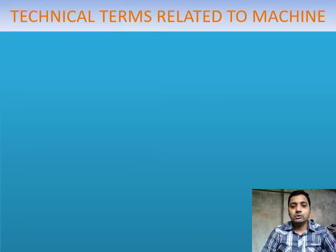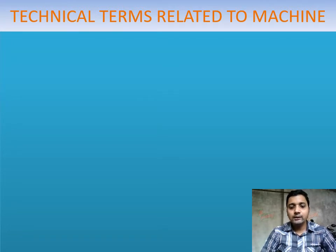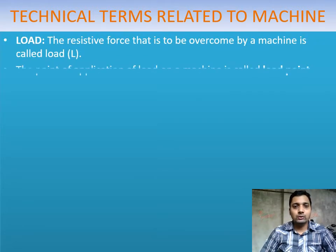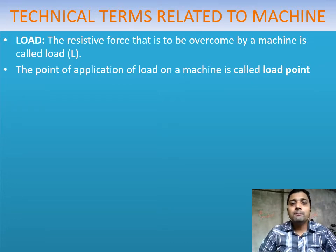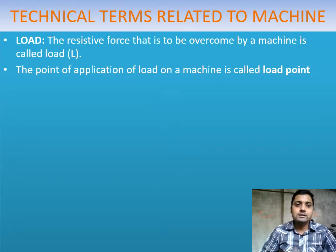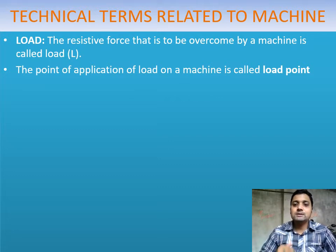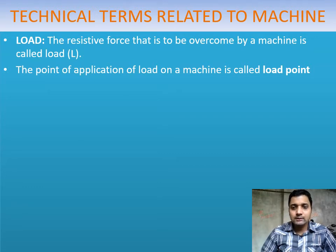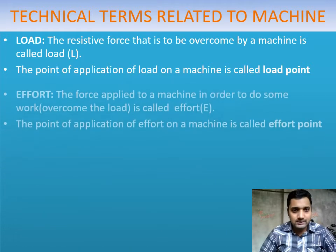Now the technical terms related to a machine — whenever we use a machine, certain terms are used. First one: load. Load is the resistive force that is overcome by the machine — it is the object which has to move from one place to another or be lifted up. The point at which the machine applies the force is called the load point. The force that we give to the machine is called the effort.